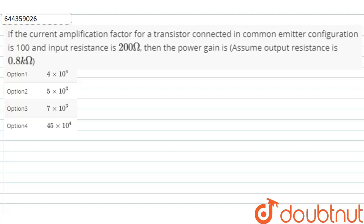The question is: If the current amplification factor of a transistor connected in a common emitter configuration is 100 and input resistance is 200 ohm, then the power gain is (assume the output resistance is 0.8 kilo ohm). Option 1: 4 × 10⁴. Option 2: 5 × 10³. Option 3: 7 × 10³. Option 4: 45 × 10⁴.